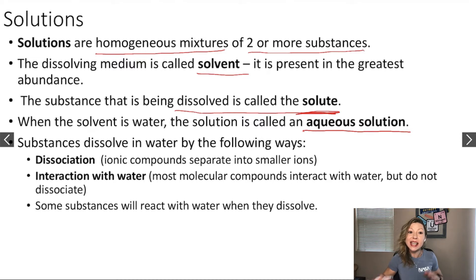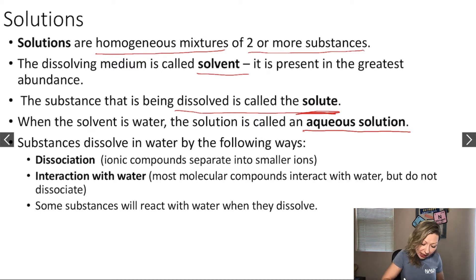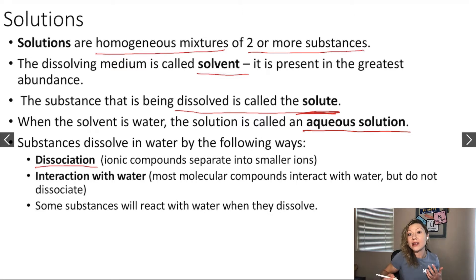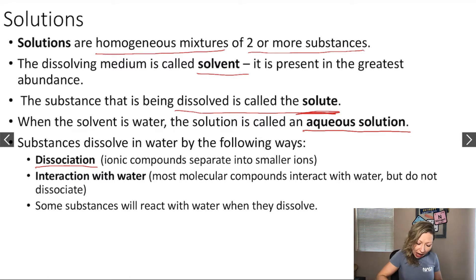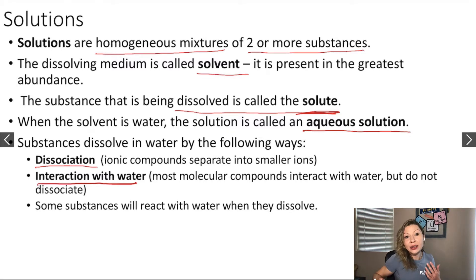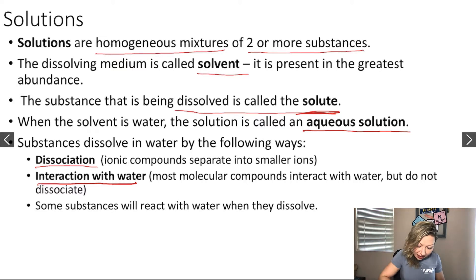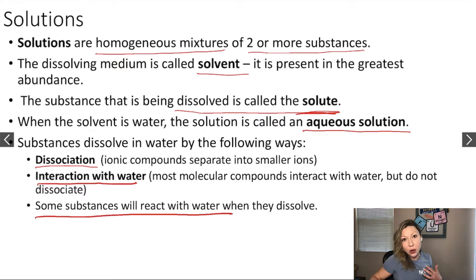Substances can dissolve in water by three ways. The first is dissociation — these are ionic compounds that separate into smaller ions. The second is interaction with water, which is characteristic for molecular compounds. And then there are some substances that will react with water when they dissolve.